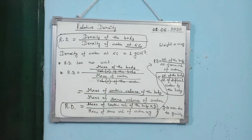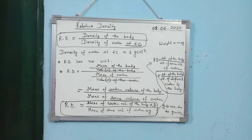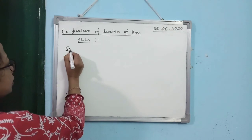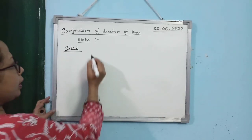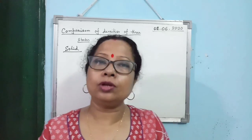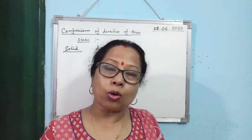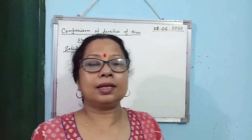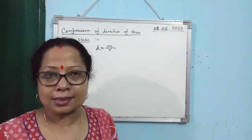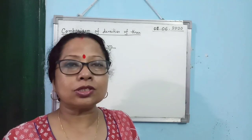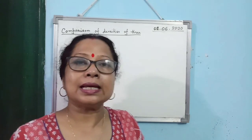Next is comparison of densities of the 3 states. For a solid, density equals mass divided by volume. For the same mass, the volume of a solid is less because its particles are closely packed, so solids are generally denser. For liquid and gas with the same mass, the density of liquid is less than solid, and for gas, the density is the least.